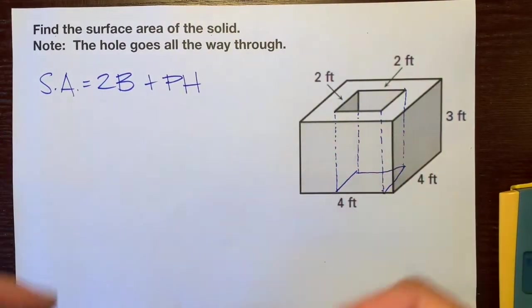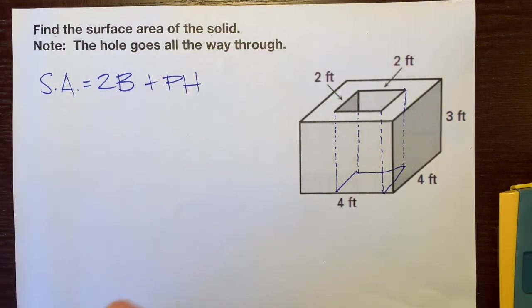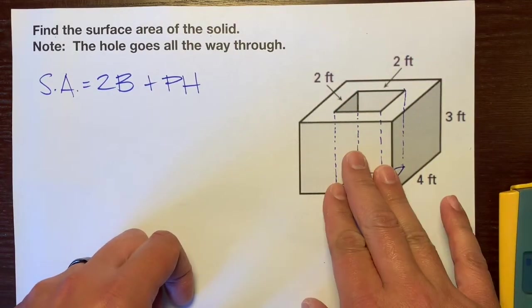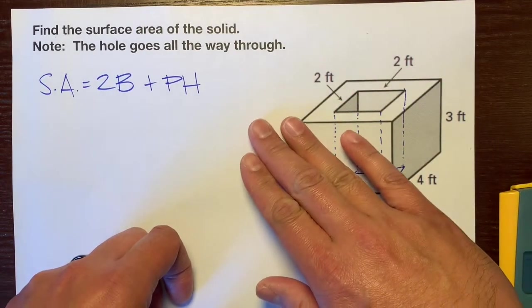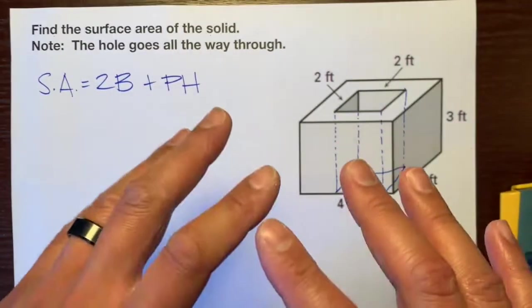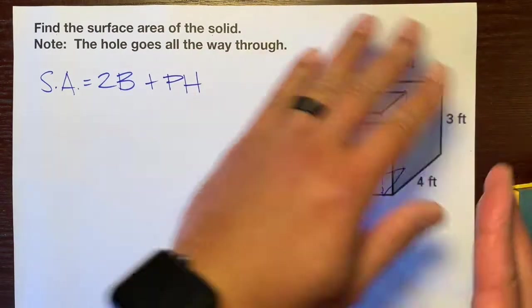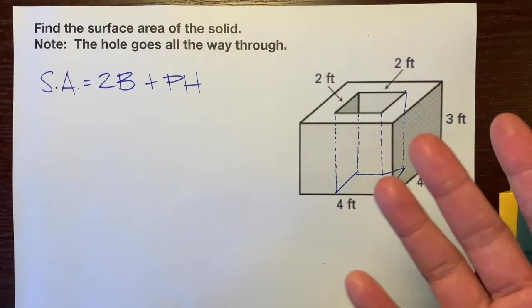Next, we'll find the surface area. Surface area is how many squares fit on the surface. Let's pretend there isn't a hole here. Let's just say this hole is covered up, and find the surface area of this rectangular prism with no hole. So let's do that.